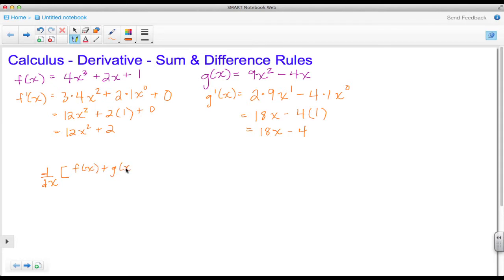D over dx, and we're going to take f(x) + g(x). To write that using the difference quotient, it's going to be the limit as h approaches 0 of f(x + h) + g(x + h) minus f(x) + g(x), and I need to show these in parentheses. All of this has to be divided by h.